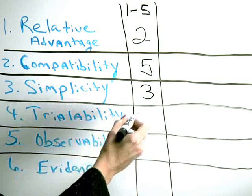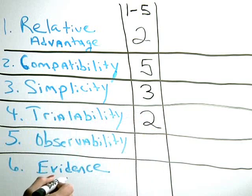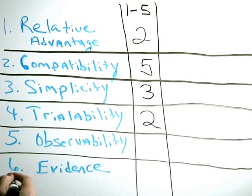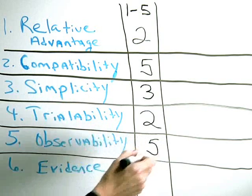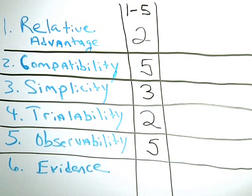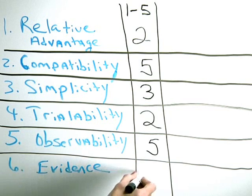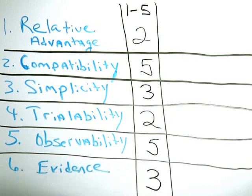Trialability. We'll probably give that a 2. Not so sure that we're going to be able to trial this, because how can we predict that a patient will need a rapid response team or not? Observability. But when we do test them, we're feeling pretty strongly that we'll be able to observe the results of them fairly quickly. And then the last one, 6, is the strength of the evidence behind rapid response teams. Well, we'll give that a 3, because we know a lot of hospitals have been really successful and seen great results. But there is some question in the literature in terms of its evidence base.